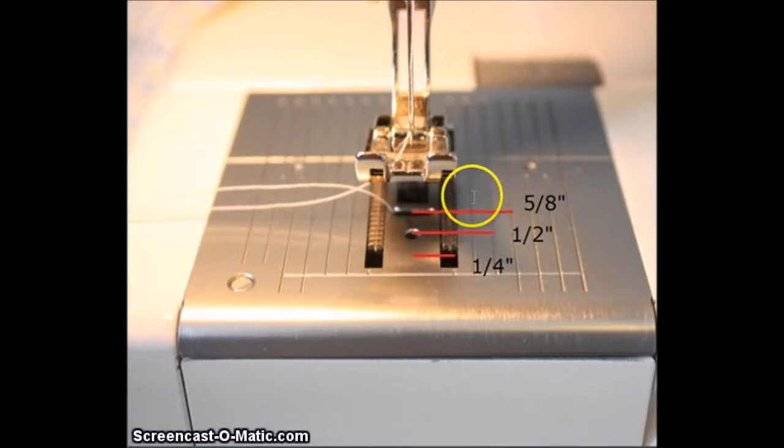are the guidelines, and they're measured out from the point where the needle goes down. So basically, if you wanted a seam allowance of five-eighths, you would put your material's edge right here and you'd follow this guide along as you push the fabric through.